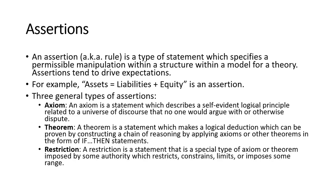An assertion is basically a rule. It specifies a permissible manipulation of a structure within a model for a theory. Assertions tend to drive expectations — for example, assets equals liabilities plus equity is an assertion. There are three general types of assertions: axioms, which are basically statements that no one would disagree with; theorems, which are basically if-then statements; and restrictions, where you need to operate within certain constraints, limitations, or some range of values.